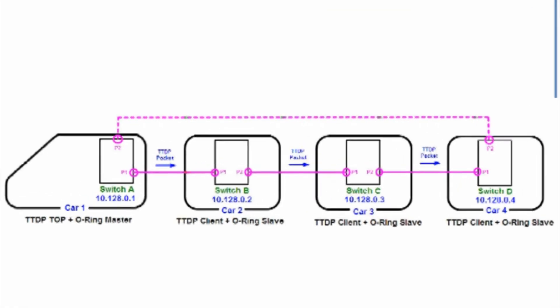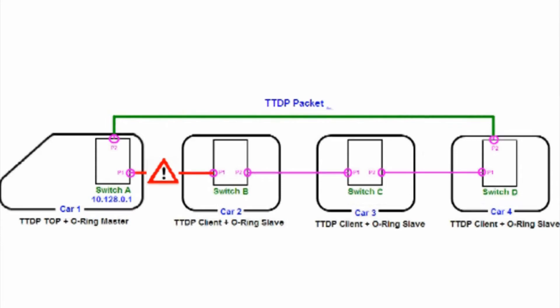However, in an O-ring topology when the master link is down and the backup link is activated during operation, TDDP will be implemented again. Therefore, the head train switch will assign a new IP address to every other switch sequentially, this time beginning from switch D as it is adjacent to switch A. As a result, the switches will be given a new IP address that doesn't match the arrangement of the carriages — switch B's IP address becomes 10.128.0.4 even though it is in the second carriage, and switch D in the fourth carriage receives IP address 10.128.0.2.